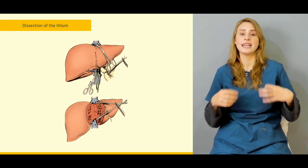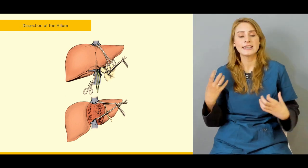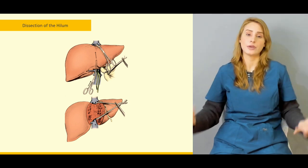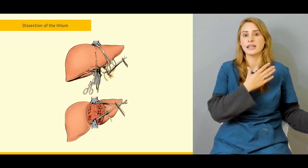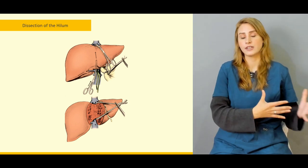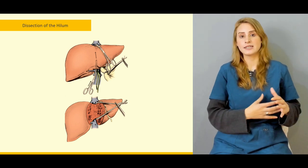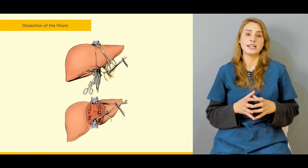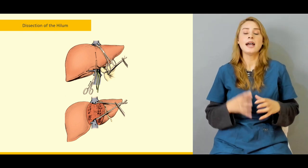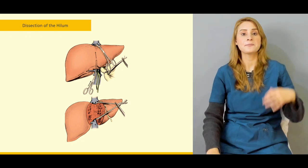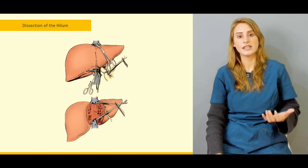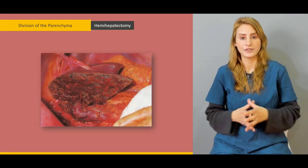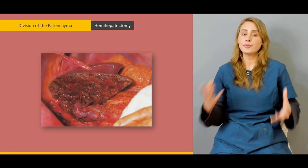Then we'll be talking about the dissection of the hilum and what important structures are actually entering into the liver, and their division into the branches supplying the right lobe of the liver independently and the left lobe of the liver independently. We'll be talking in detail about how to proceed for the dissection at the hilum of the liver.